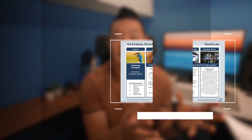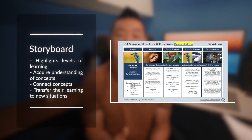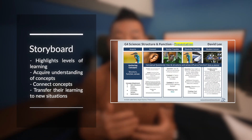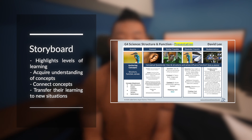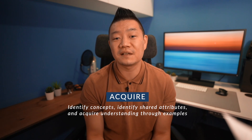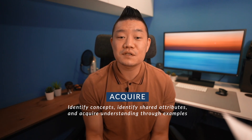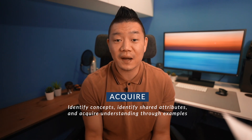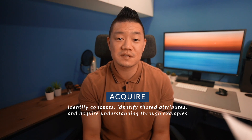There are different phases within the mental model that are illustrated within a storyboard. A storyboard highlights the different levels of learning where students acquire understanding of concepts, connect concepts, and ultimately transfer their learning to new situations. The first phase is Acquire, where the most important concepts are identified and students acquire understanding of them by learning about the shared attributes of each concept through examples.